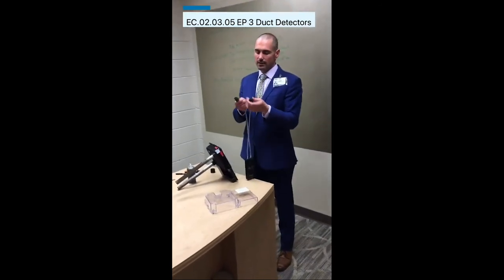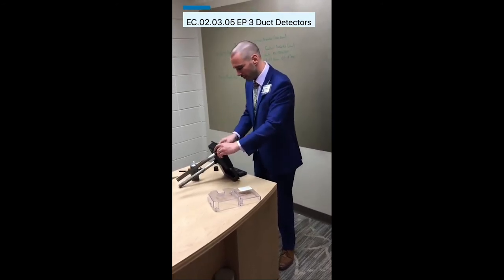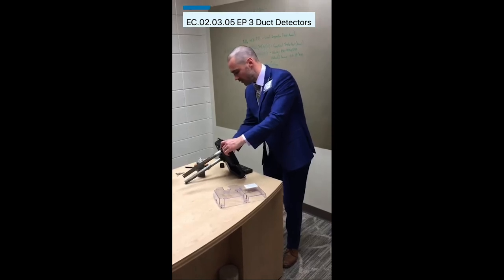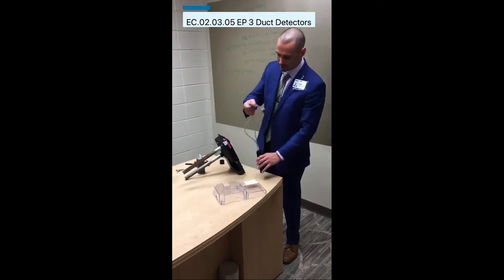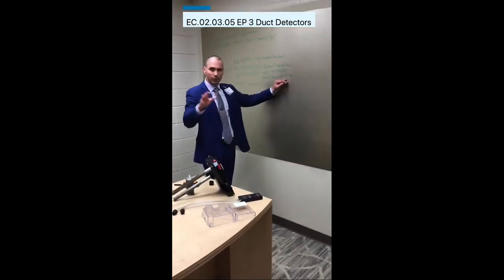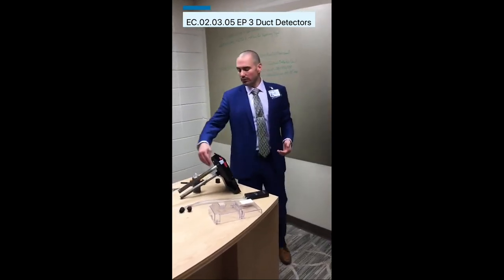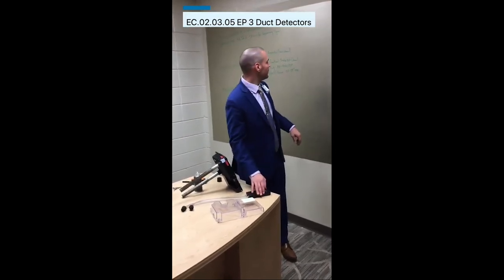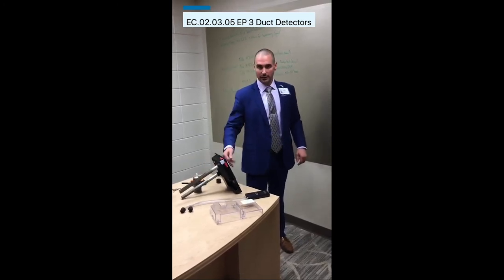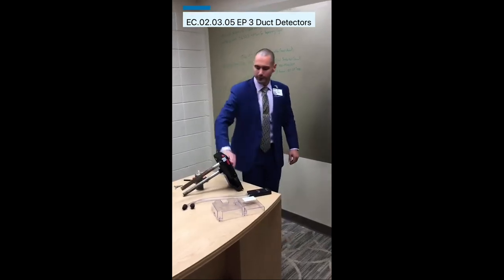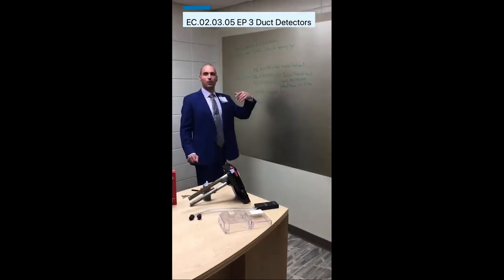For differential pressure, we use a digital manometer with rubber grommets connected to the tube — hold one up to the supply and one to the exhaust and check the differential pressure against manufacturer recommendations. Generally, 0.1 to 1.1 inches of water column is acceptable. This test confirms that air is actually coming into the housing, meaning the detector will receive the air it needs to function.